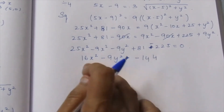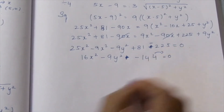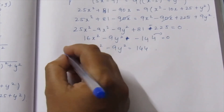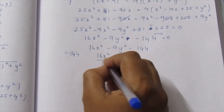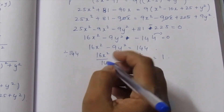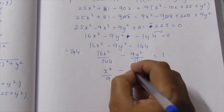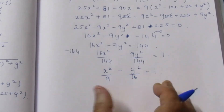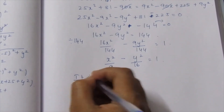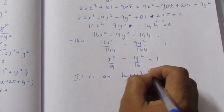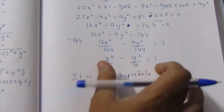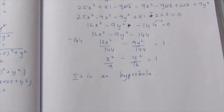So 16x² minus 9y² equals 144. Dividing both sides by 144: x²/9 minus y²/16 equals 1. This is in the standard form x²/a² minus y²/b² equals 1. It is a hyperbola equation. So the location of the explosion lies on a hyperbola. Thank you.